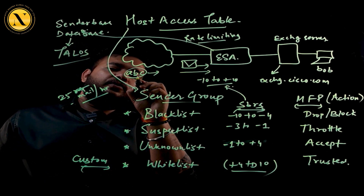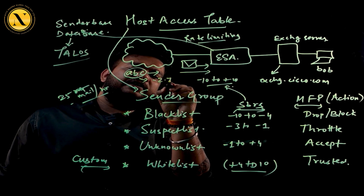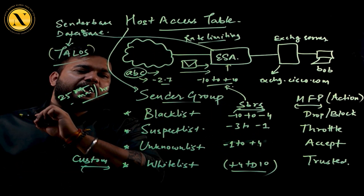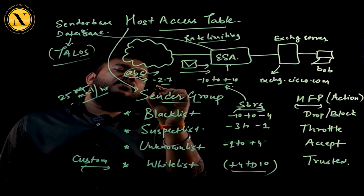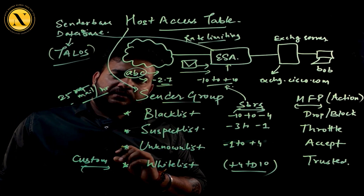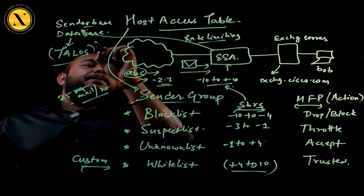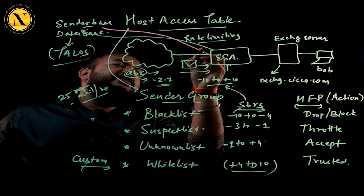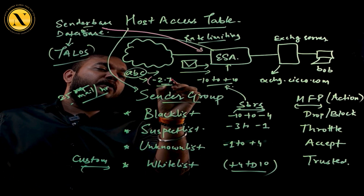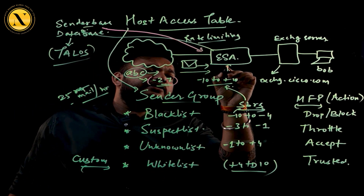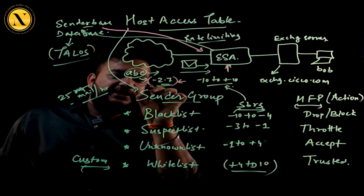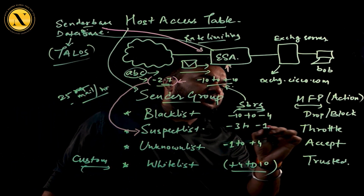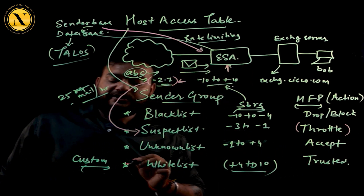Let's suppose ABC has a reputation score of minus 2.7. As soon as the email arrives at the ESA, it contacts Talos and asks the Sender Base what to do with a user having a reputation score of minus 2.7. The Sender Base replies with that score, and the ESA directly allocates that user to the suspect list. The mail flow policy action applied is throttle, imposing rate limitations on that email.